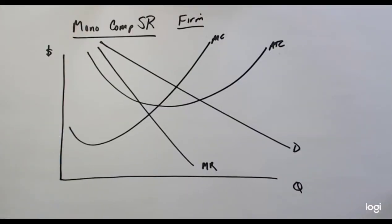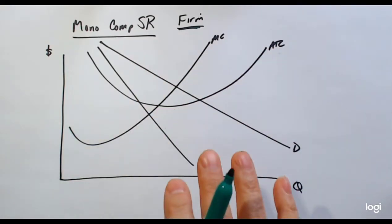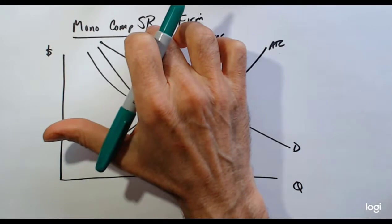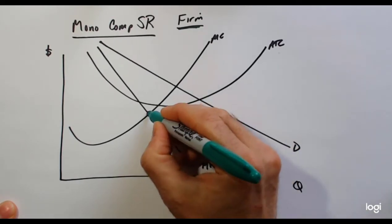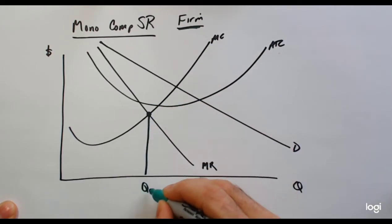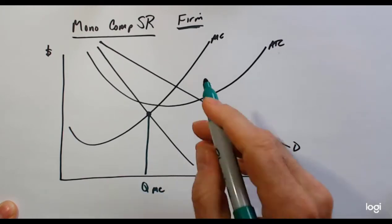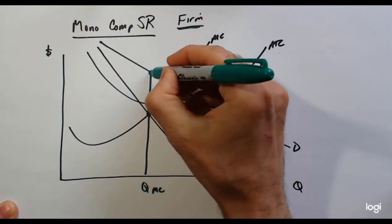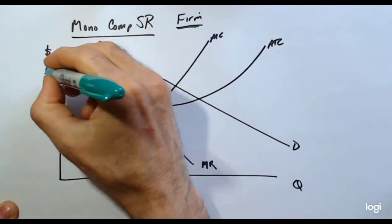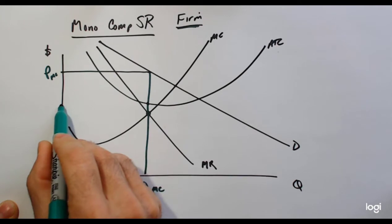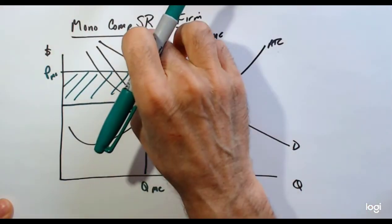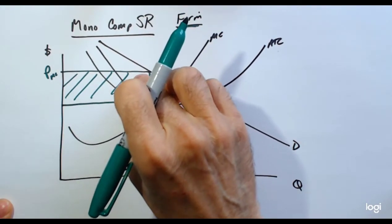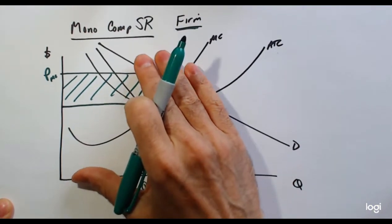Here we have a monopolistically competitive firm in the short run — and it's always important when you look at these graphs to know whether you're looking at a particular firm or an industry. Here it's a firm. The reason we're showing the short run is because this firm is producing profits. The decision for quantity output is where marginal cost equals marginal revenue, so we'll put QMC. At this particular quantity the price will be here — this is the price the firm will charge. This is its average costs, and therefore this area represents profits accruing to this monopolistically competitive firm in the short run.